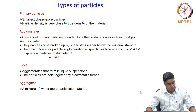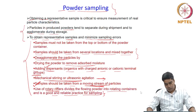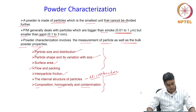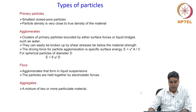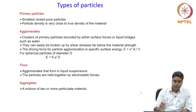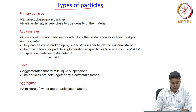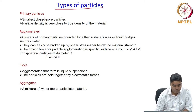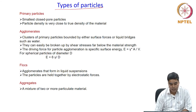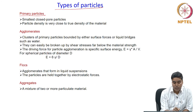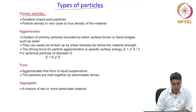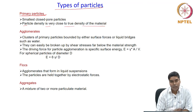Now let us see what the different kinds of particles we are talking about are. These are the different kinds of particles that one might encounter in a powder. Primary particles are the smallest closed-pore particles, wherein the particle density is very close to the true density of the material.